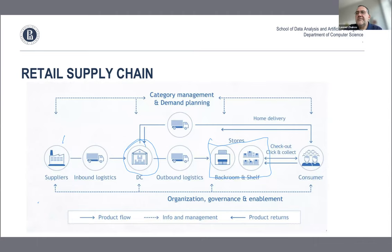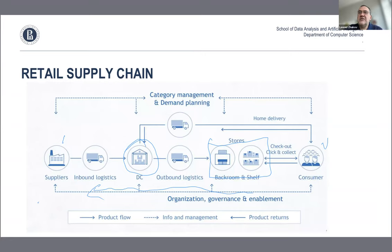What's interesting is that product flows left to right through the supply chain, but information and management flow from right to left — from the consumer back through the supply chain. It's the consumers who pay money, and depending on demand, the retailer's job is to understand and provide supply by going back along the supply chain, requesting goods to be stored and delivered from suppliers to distribution centers.